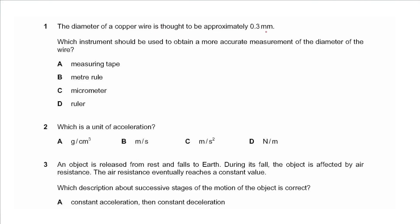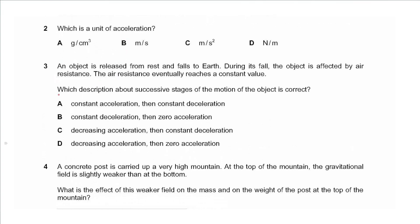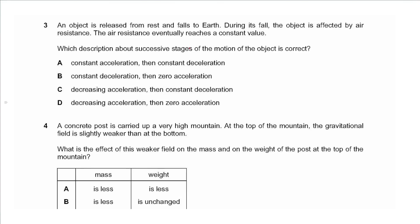Question 1 says the diameter of a copper wire is thought to be approximately 0.3 millimeters. Which instrument should be used to obtain a more accurate measurement of the diameter of the wire? That would be a micrometer. The measuring tape, meter rule, and ruler all have the same scale. A micrometer has a scale which reads two decimal places in millimeters, so the answer is C. Question 2 says which is a unit of acceleration — that would be meters per second squared, so the answer is C.